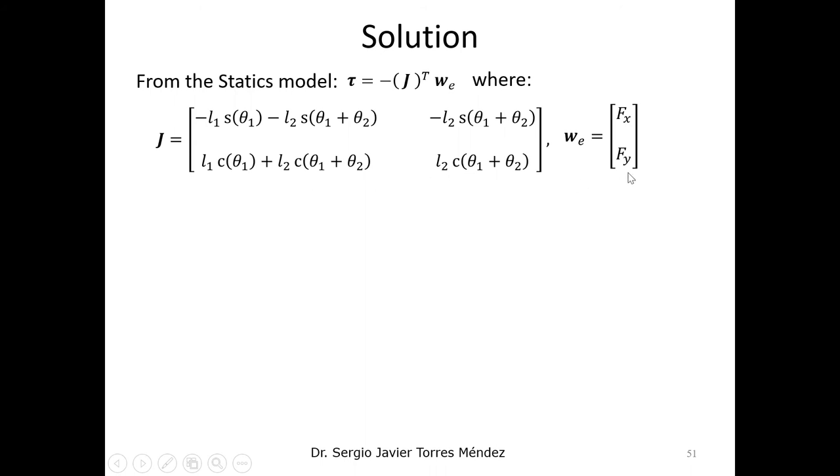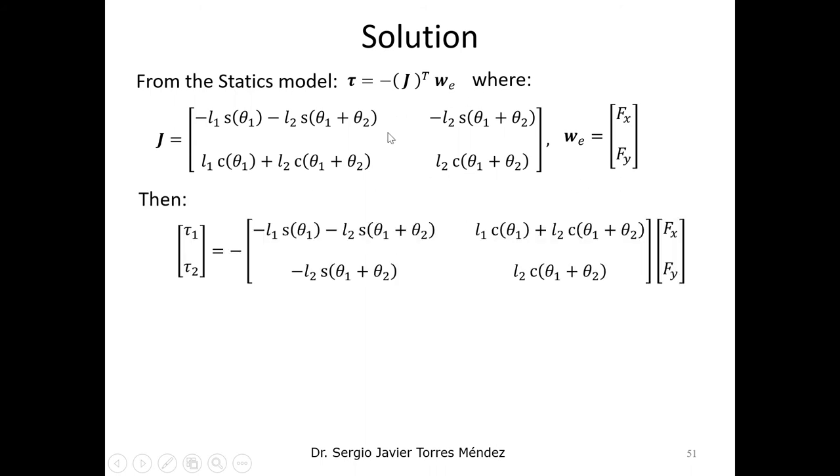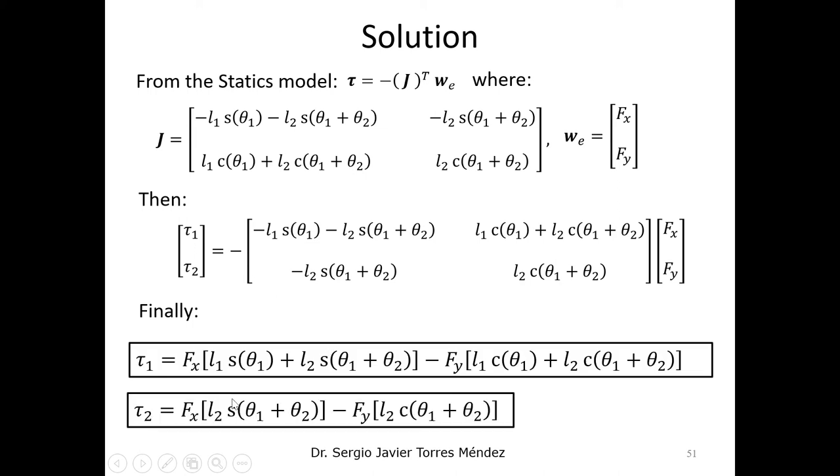Now with these two components, the Jacobian matrix, and the wrench, we can substitute in this static formulation and then make this matrix multiplication. Remember that we have this minus sign. We obtain both equations to have the torques that we need to apply in order to balance this external force and keep the robot in that position.